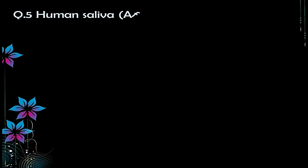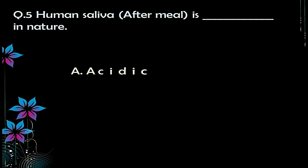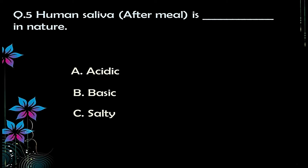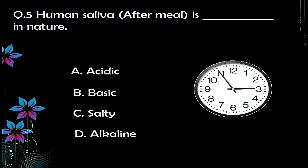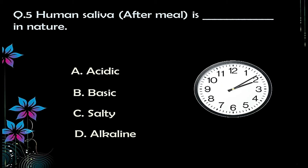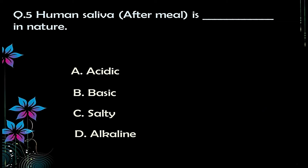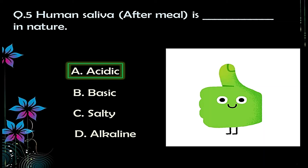Question number five: human saliva after a meal is dash in nature. Options: A) acidic, B) basic, C) salty, D) alkaline. This will be very easy if you know the pH value of human saliva. The answer is A — acidic.